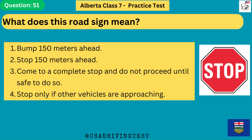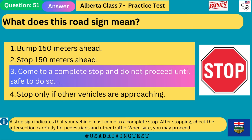What does this road sign mean? 1. Bump 150 meters ahead. 2. Stop 150 meters ahead. 3. Come to a complete stop and do not proceed until safe to do so. 4. Stop only if other vehicles are approaching. The answer is 3: come to a complete stop and do not proceed until safe to do so. A stop sign indicates that your vehicle must come to a complete stop. After stopping, check the intersection carefully for pedestrians and other traffic. When safe, you may proceed.